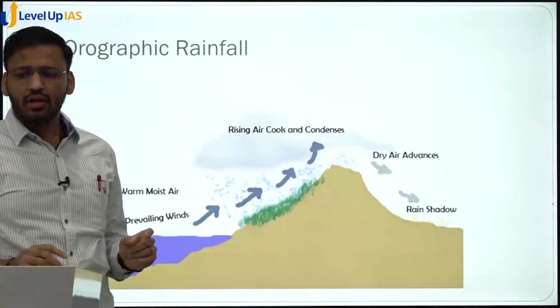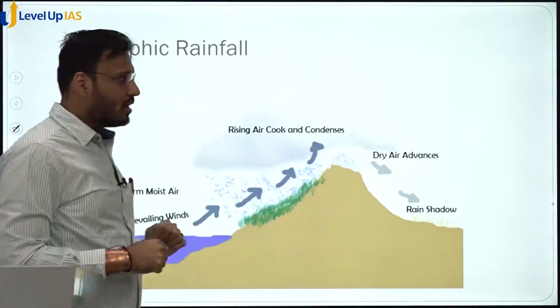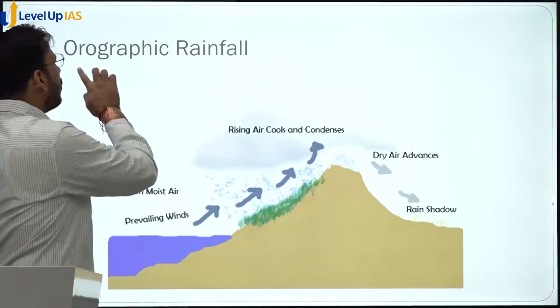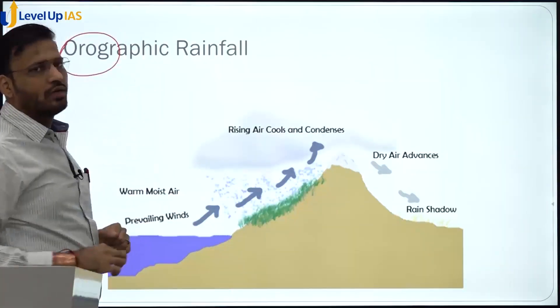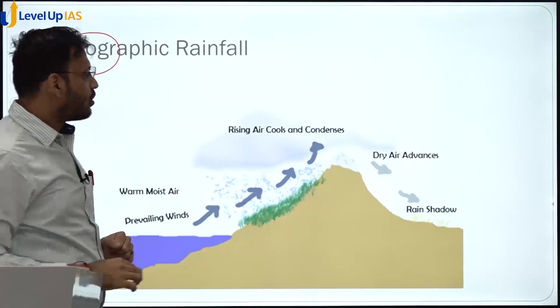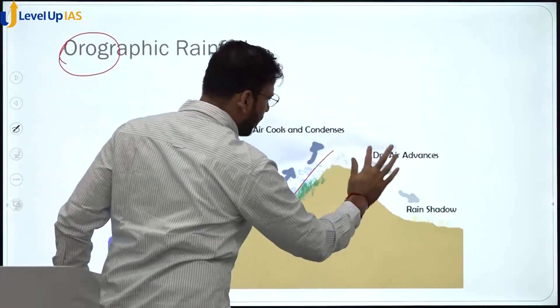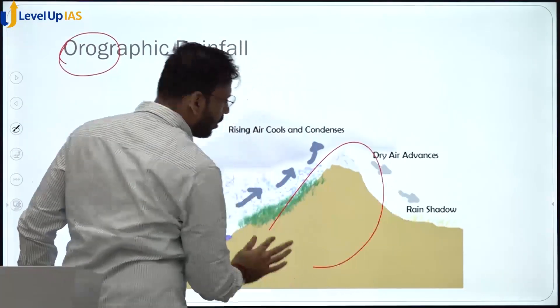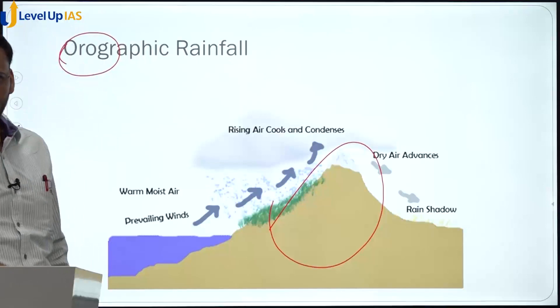The second type of rainfall is orographic rainfall. Here 'oro' means mountain. So rainfall that occurs because of a mountain is called orographic rainfall.